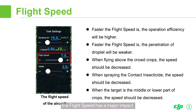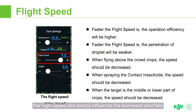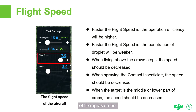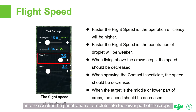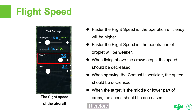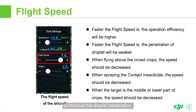Flight speed has a major impact on operational efficiency and performance. Given the same spraying amount, the higher the flight speed, the higher the efficiency. The flight speed also directly influences the downward wind field of the agri-drone. Within a certain range, the higher the speed, the weaker the downward wind field and the weaker the penetration of droplets into the lower part of the crops. Therefore, a suitable flight speed should be selected based on the operation type. Dense crops and contact pesticides require a lower flight speed to improve droplet penetration.